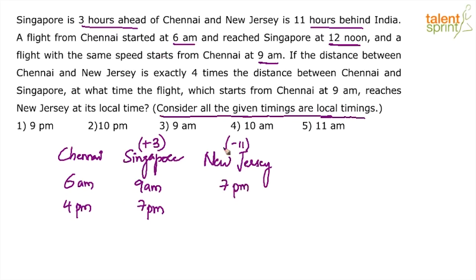If you are unable to do minus 11 easily, convert to 24 hours. For example, 4 pm in 24-hour clock is 1600 hours. 16 minus 11 is 5. So 4 pm in India becomes 5 am in New Jersey.